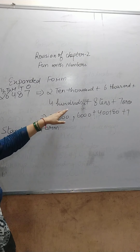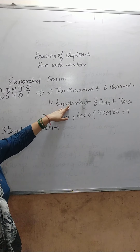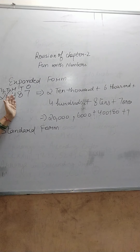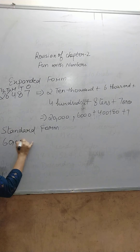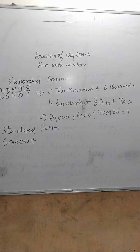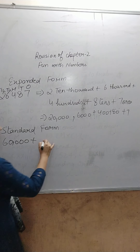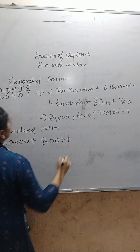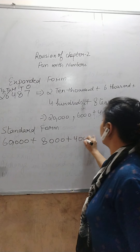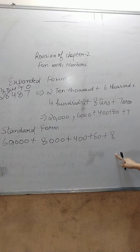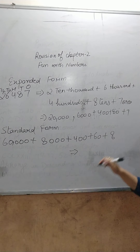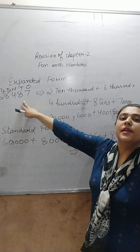In this, expanded form is given and we have to convert it into standard form. For example: 60,000 + 8,000 + 400 + 60 + 8. Now this is the expanded form and we have to convert it into standard form — the normal way to write the number.